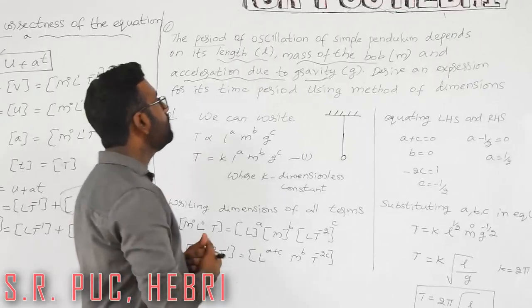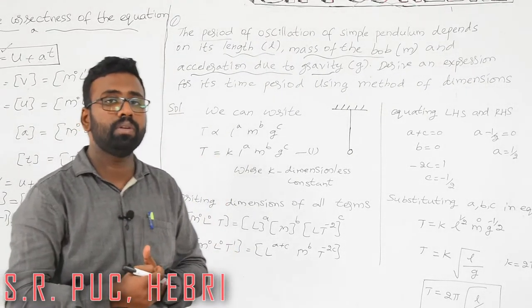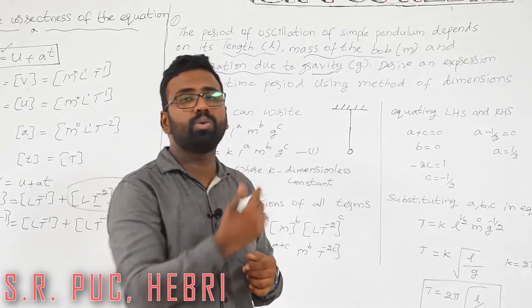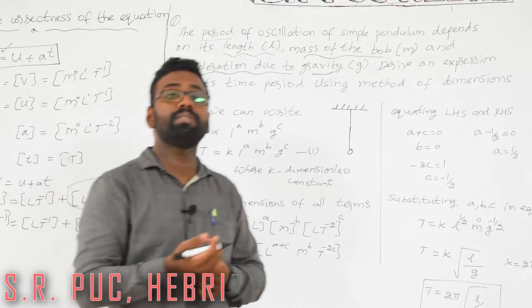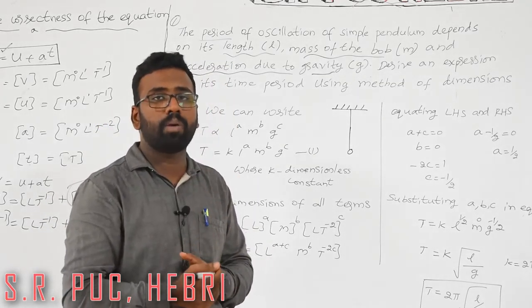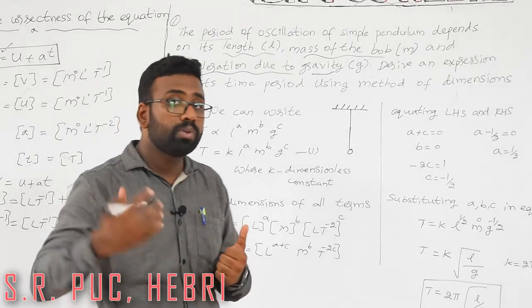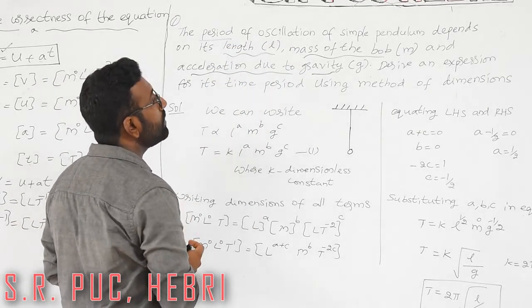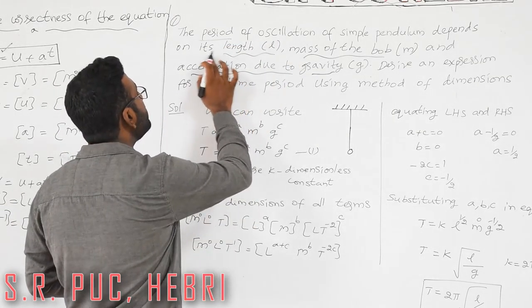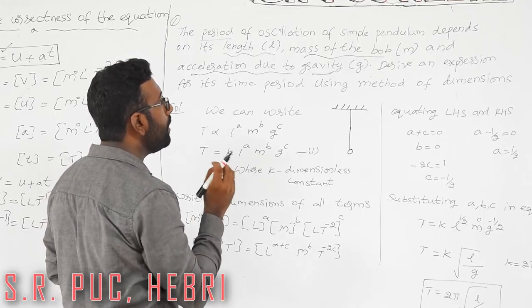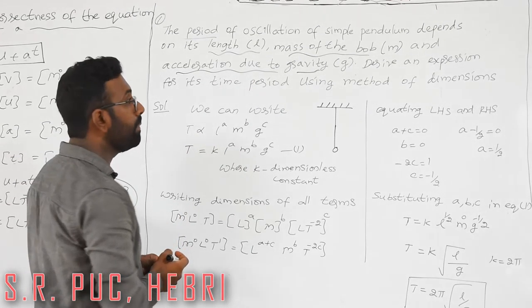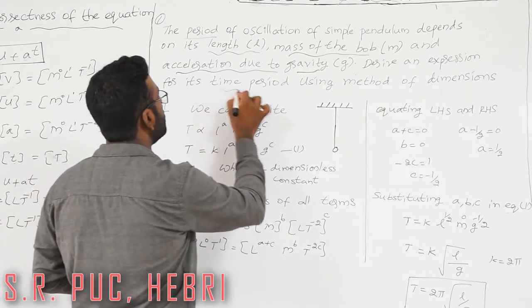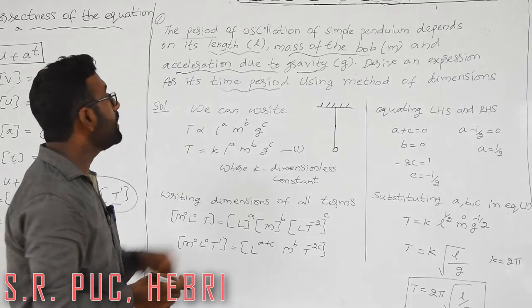We will now look at a type of derivation using the dimensional technique — these questions have appeared in previous year examinations. The question: the period of oscillation of a simple pendulum depends on its length l, mass of the bob m, and acceleration due to gravity g. Derive an equation for its time period.